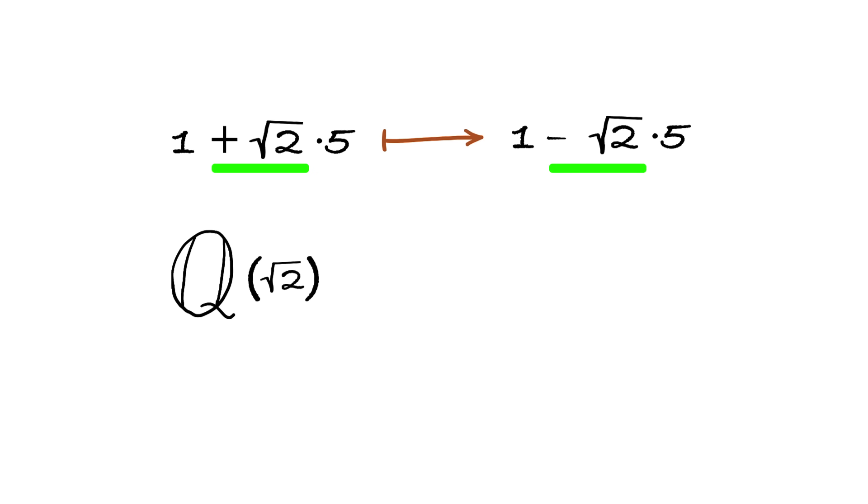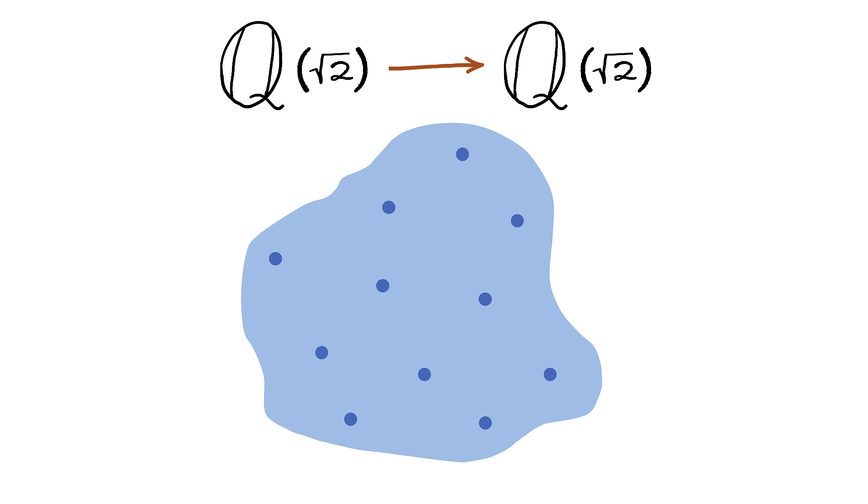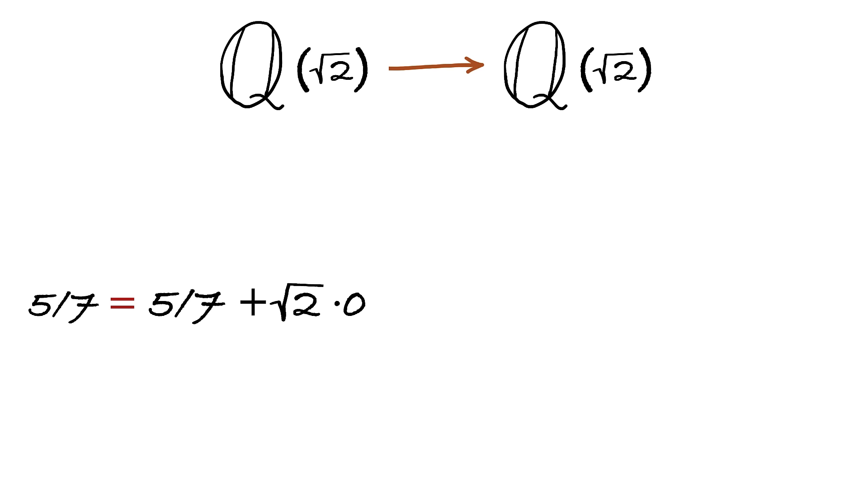Similarly, instead of this number, we would have this one. This mapping certainly shuffles numbers around within our field, but something important remains unchanged. First of all, notice that all rational numbers are not affected by this transformation. But there is more.